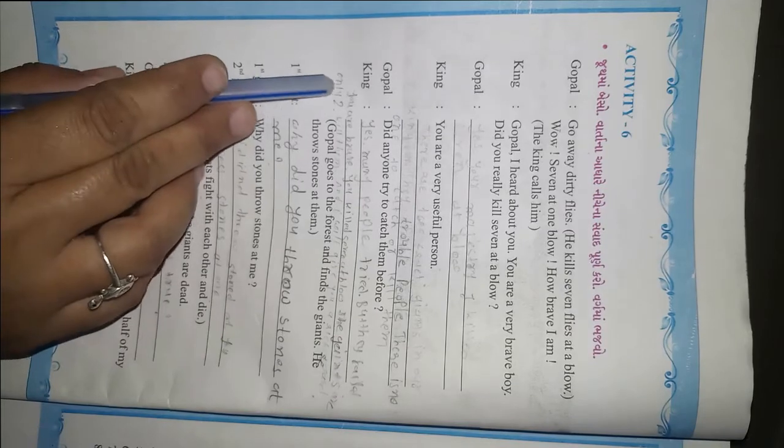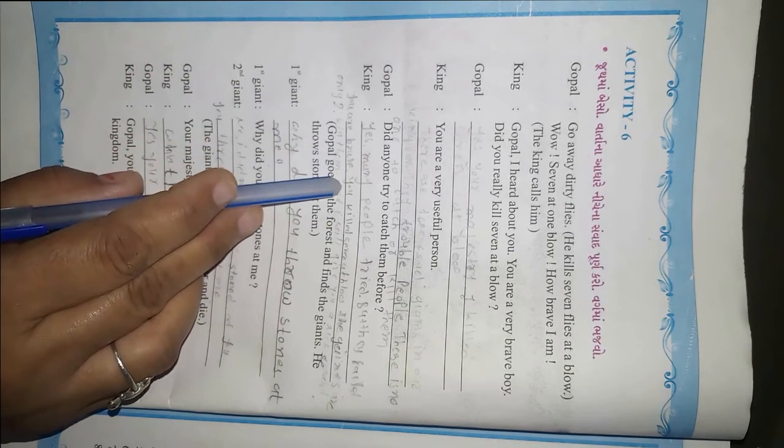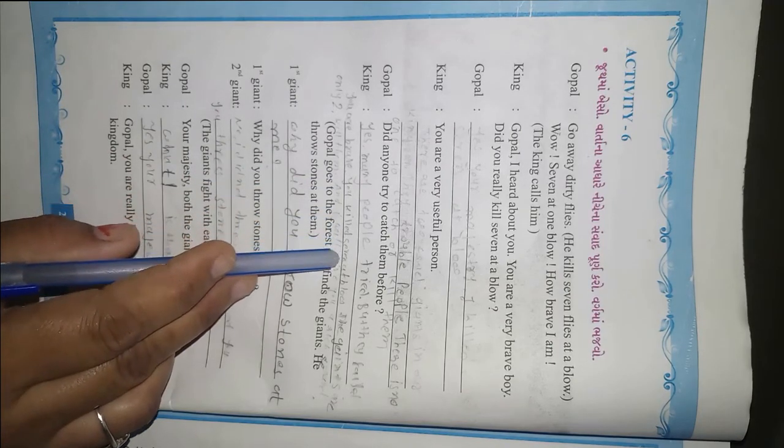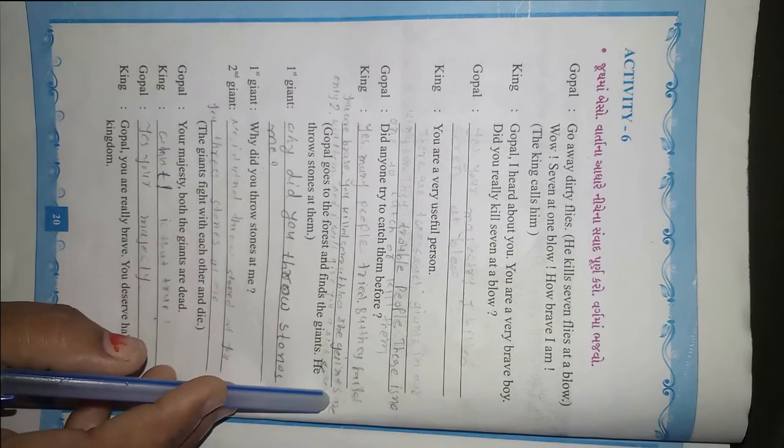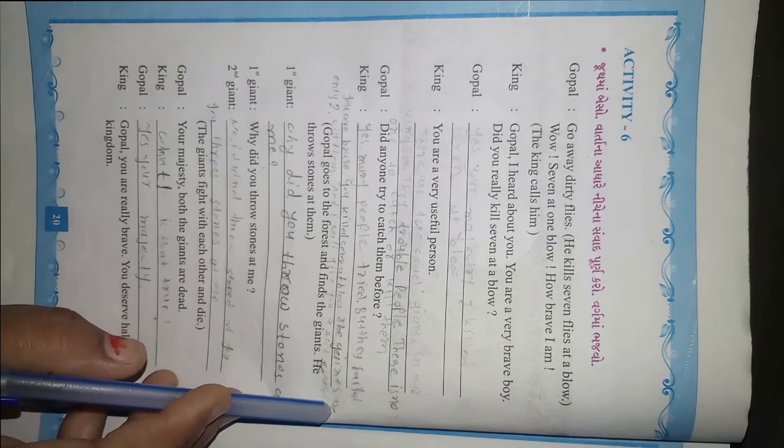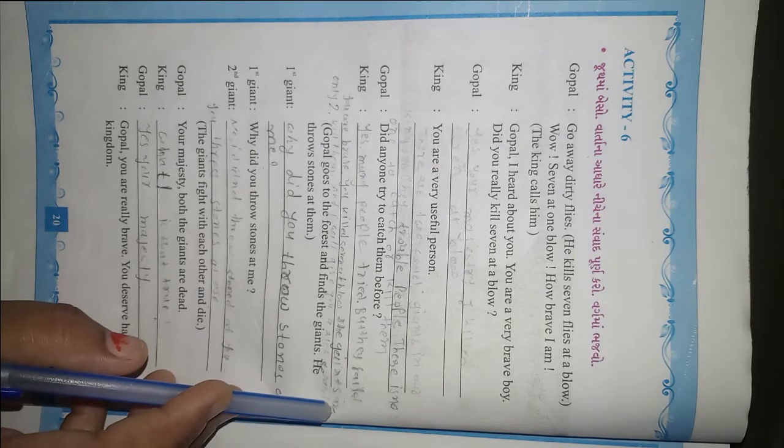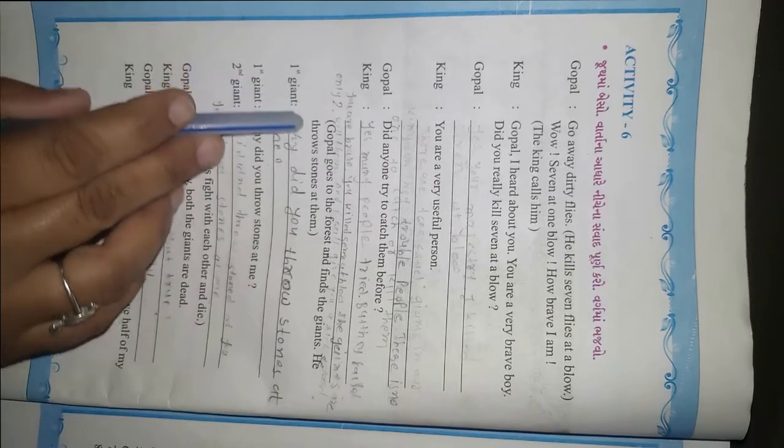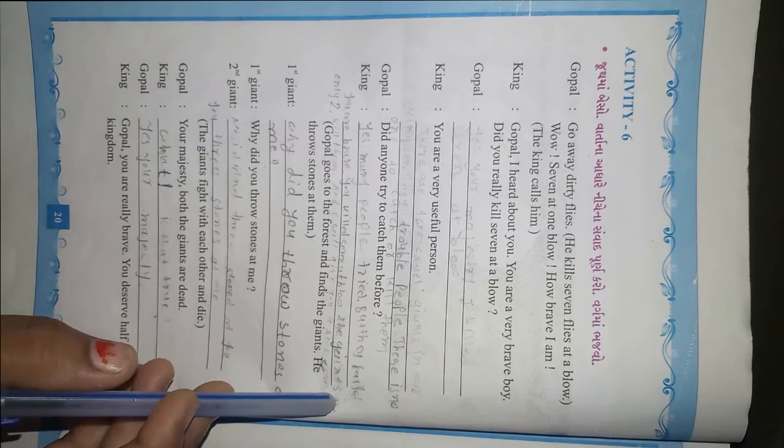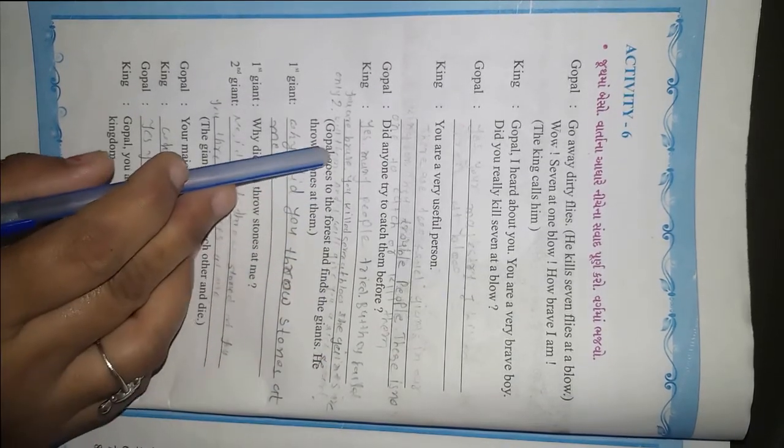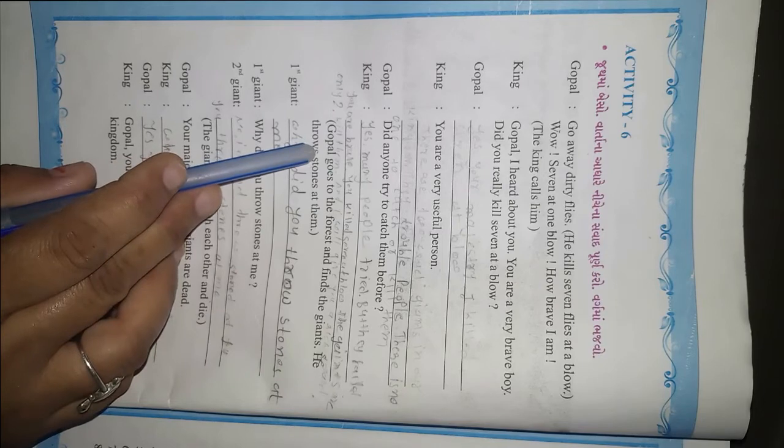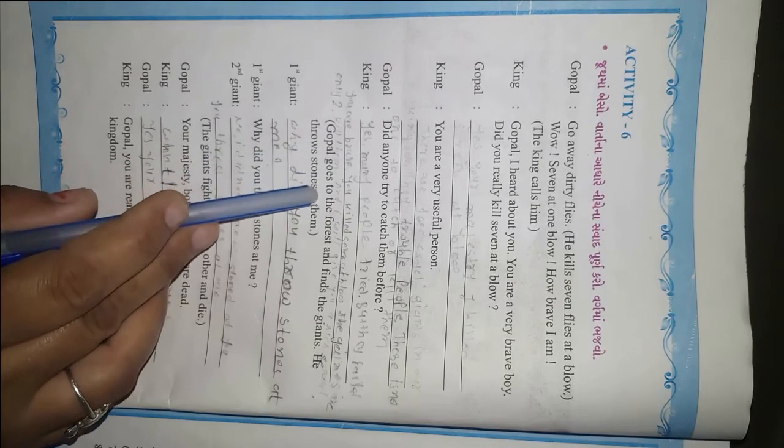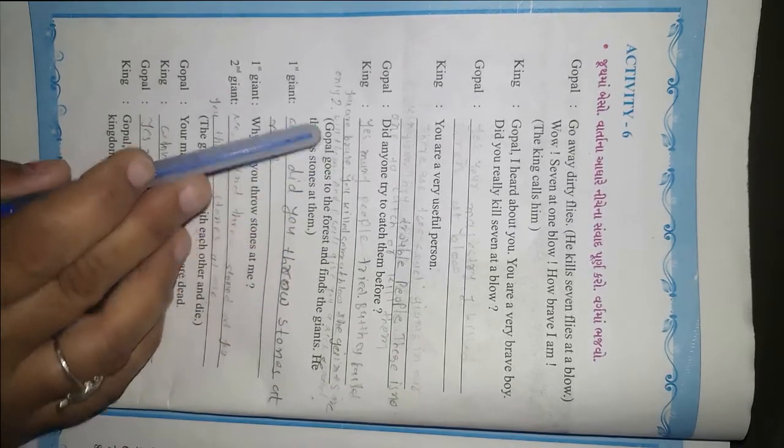The King said, 'The giants are only two. If you killed seven men, then two giants should be easy. Kill them and I will give you a reward.' Gopal agreed to kill the giants.